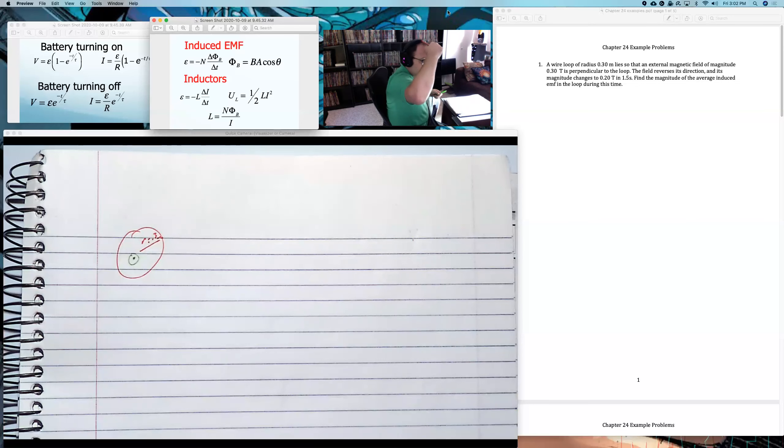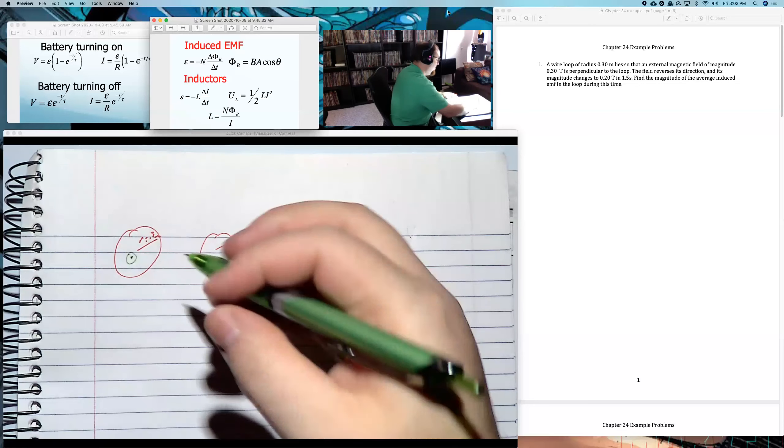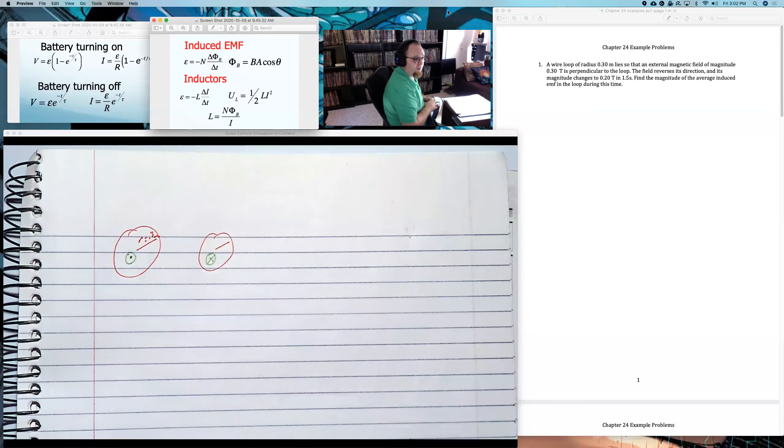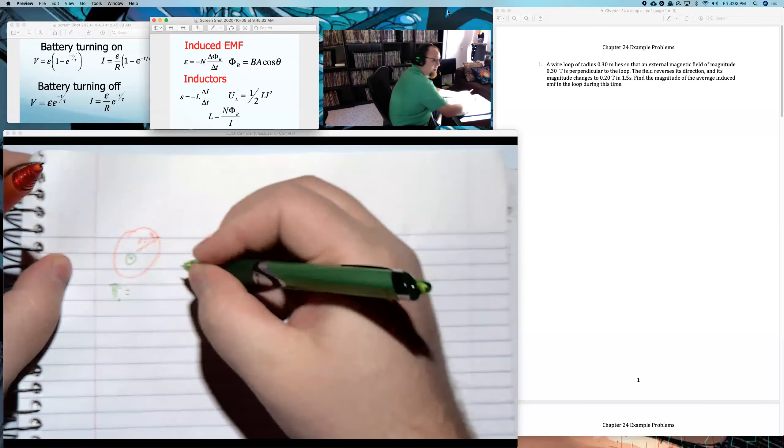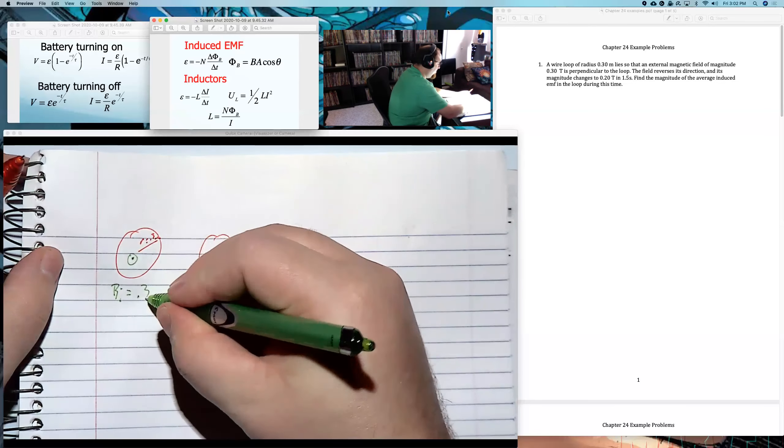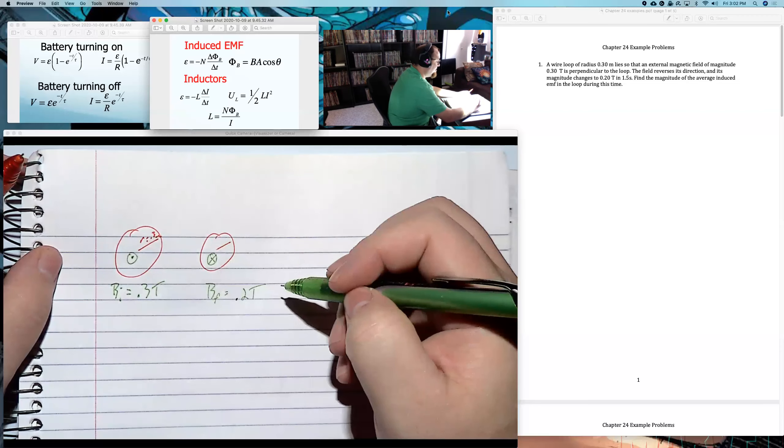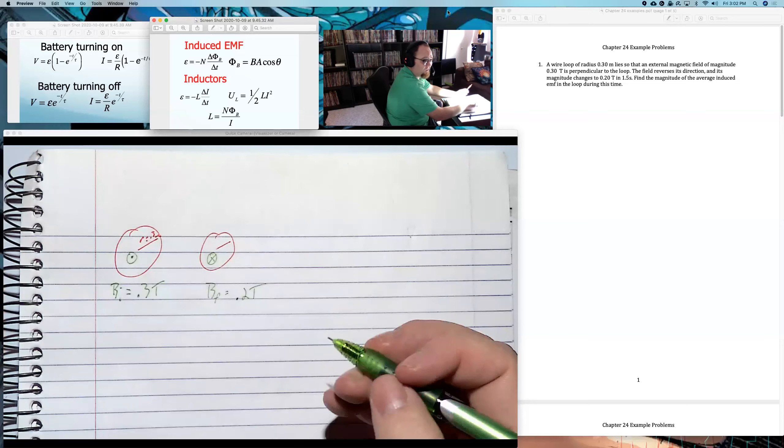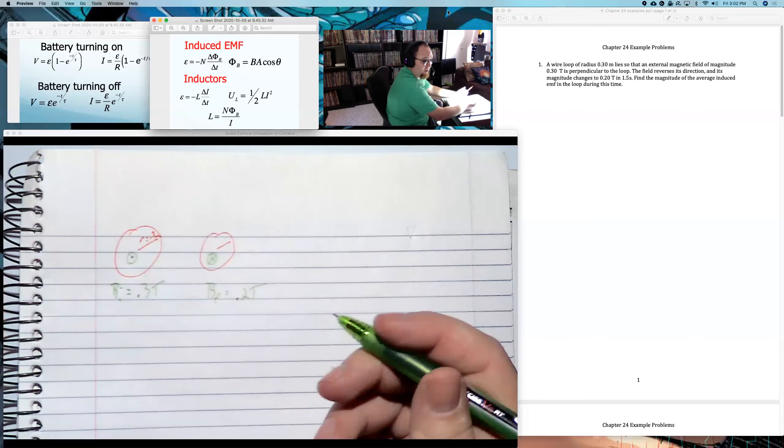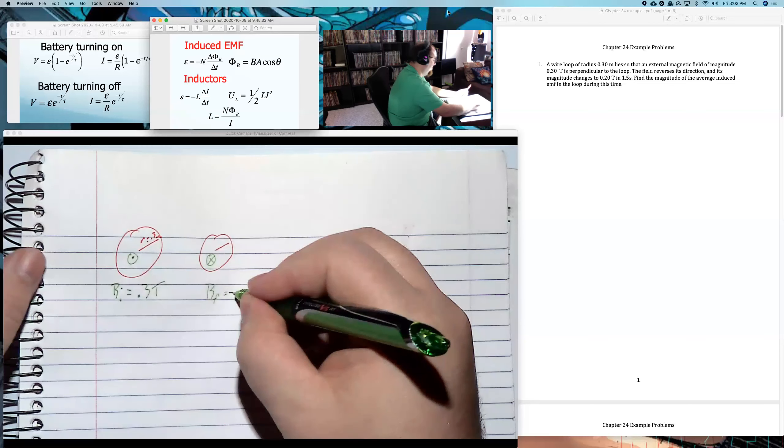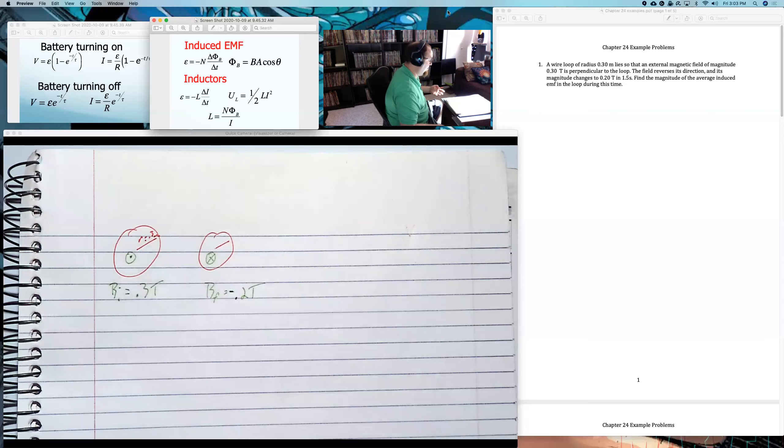The field reverses its direction, which means it's going to go from what I just drew to now going the opposite way. And its magnitude changes as it does it. Find the magnitude of the average induced EMF. Basically, what I'm going to say is I'm going to have a B initial of 0.3 Tesla. And afterwards, I'm going to have a B final of 0.2 Tesla. But they're in opposite directions. So I have to say one of these two is negative. It doesn't really matter which one I make negative, as long as I make one of them negative. I'll make the second one negative just because. But I only asked for the magnitude, so it doesn't matter which.